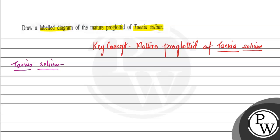has a complete set of male and female reproductive organs. So in a mature proglottid, we can see the uterus with fertilized egg capsules.